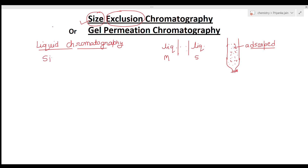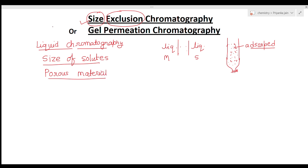In size exclusion chromatography, separation is based on the size of the solute particles. The separation is done on a porous stationary phase material. The solute's ability to enter the pores of the column packing determines separation. Suppose we have a column with stationary phase particles containing pores — the solutes enter these pores based on their size.